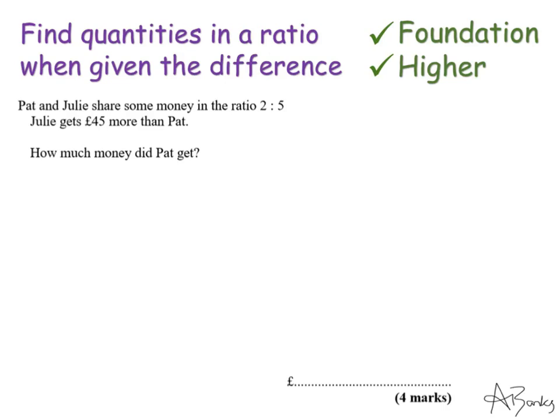This question says that Pat and Julie share some money in the ratio 2 to 5. Julie gets £45 more than Pat. How much money did Pat get? We could start by writing out numbers that are in the ratio 2 to 5.